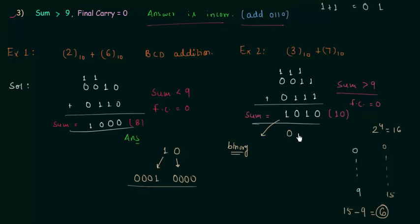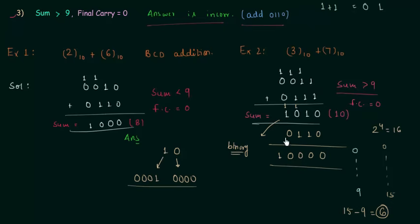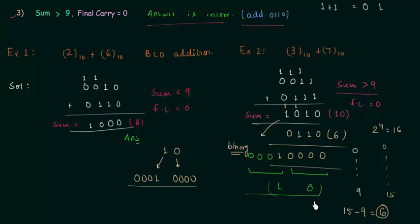So I will add 6, which is 0110. 0 plus 0 is 0; 1 plus 1 is 0 with carry equal to 1; 1 plus 0 plus 1 is 0 with carry equal to 1; 1 plus 1 plus 0 is 0 with carry equal to 1. Now we have 10000 as our answer after adding 6. We will start from the right and make groups of 4 bits, adding three zeros to the left. The first group gives us 0 and the second group gives us 1, so this is 10 in decimal.